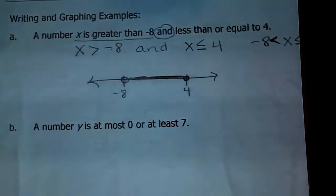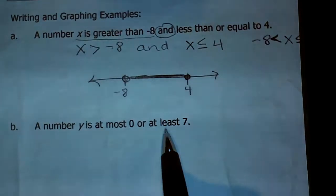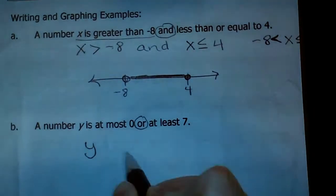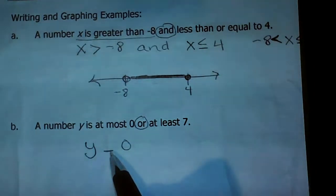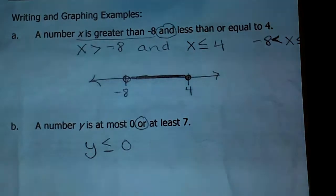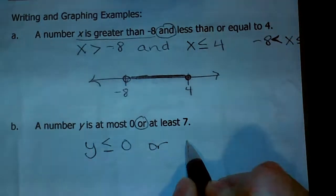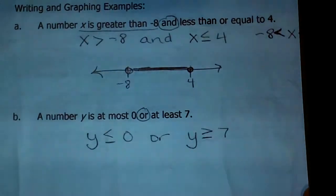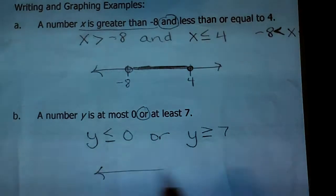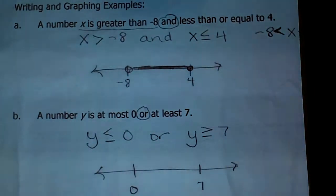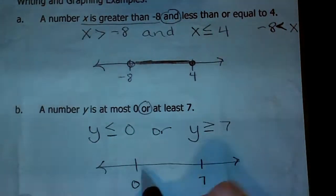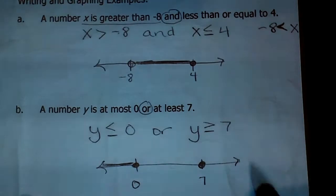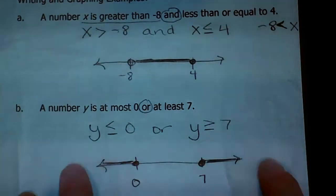A number y is at most 0 or at least 7. This is going to be an 'or' — the word 'or' is right there. If y is at most 0, that means y can be 0 but that's the most it can be, so it can be equal to or less than 0. If y is at least 7, it can be 7 or all values greater — 7 is just the lowest it can be. There's no shortcut for the 'or' graph. Lower value on the left, higher on the right: y is less than or equal to 0, so close and shade left; y is greater than or equal to 7, so close and shade right.